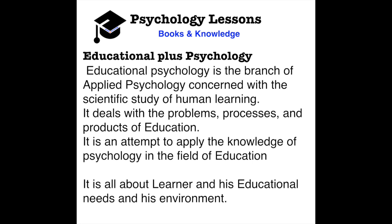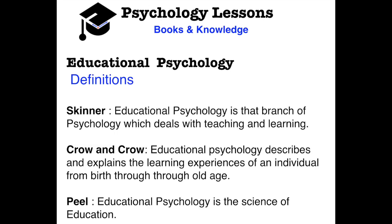Now let's do the definitions. Skinner, Crow and Crow, and Peel — they are all psychologists who try to explain what educational psychology is. Skinner says that it is the branch of psychology which deals with teaching and learning. When a learner learns and how a teacher teaches — this is all there in educational psychology.